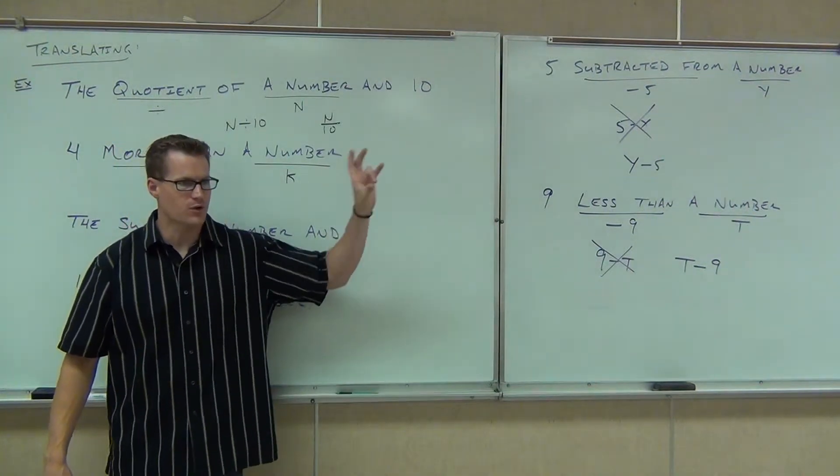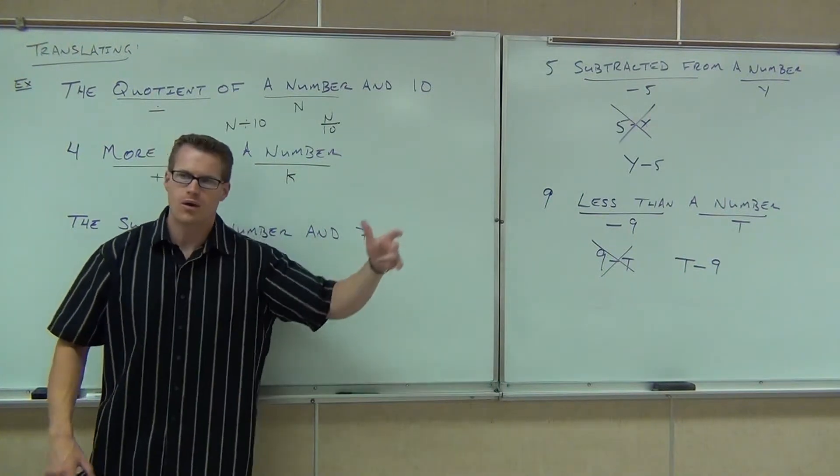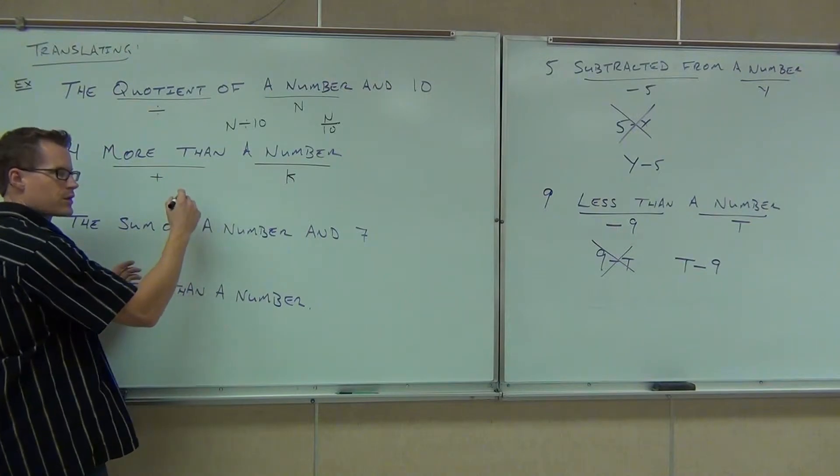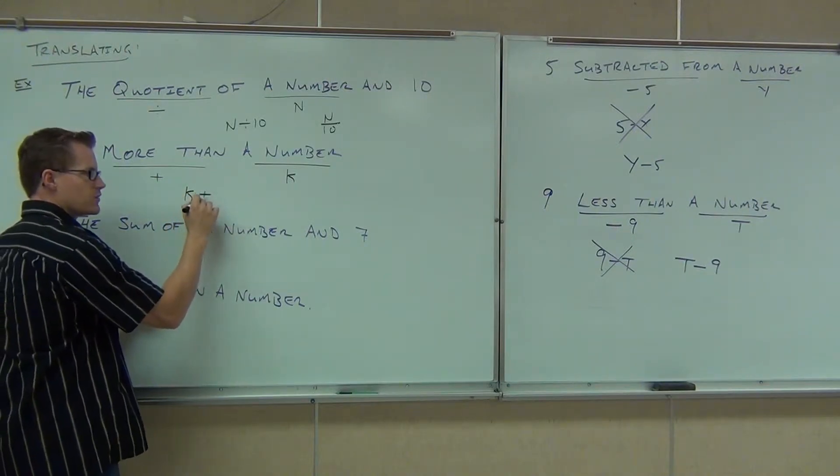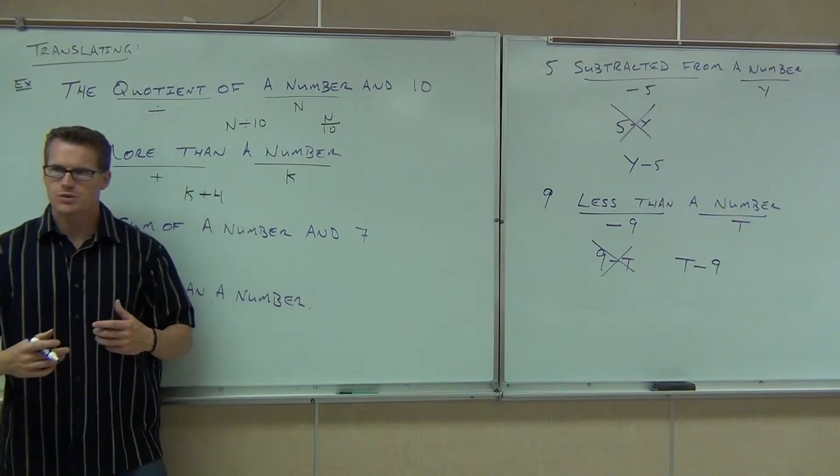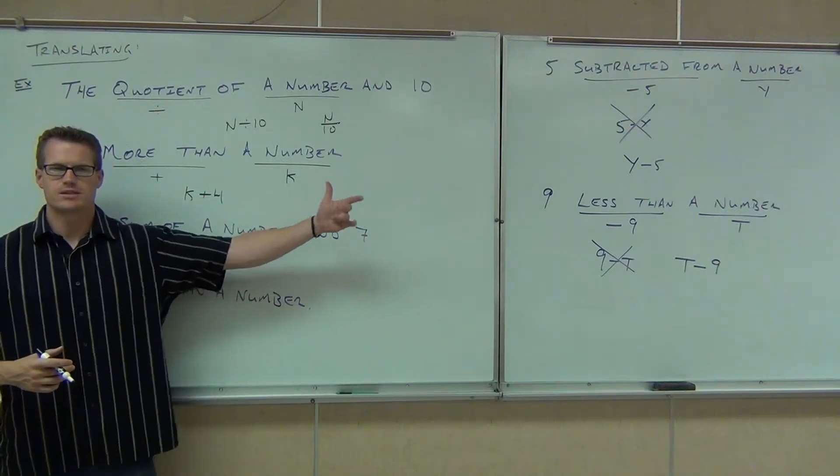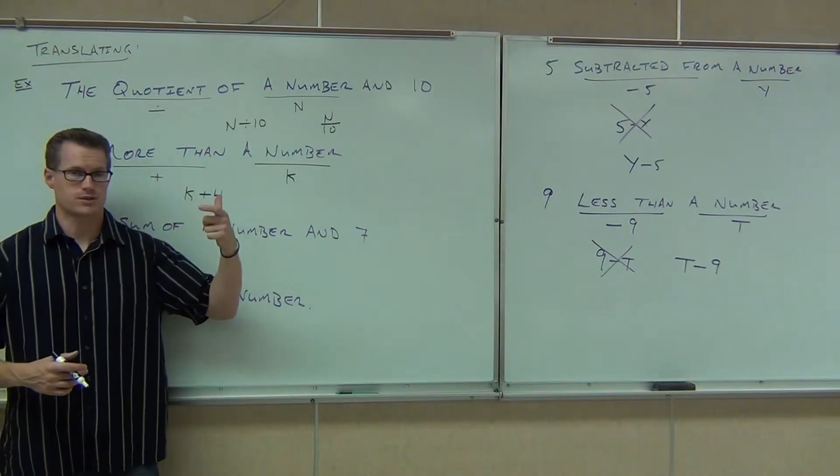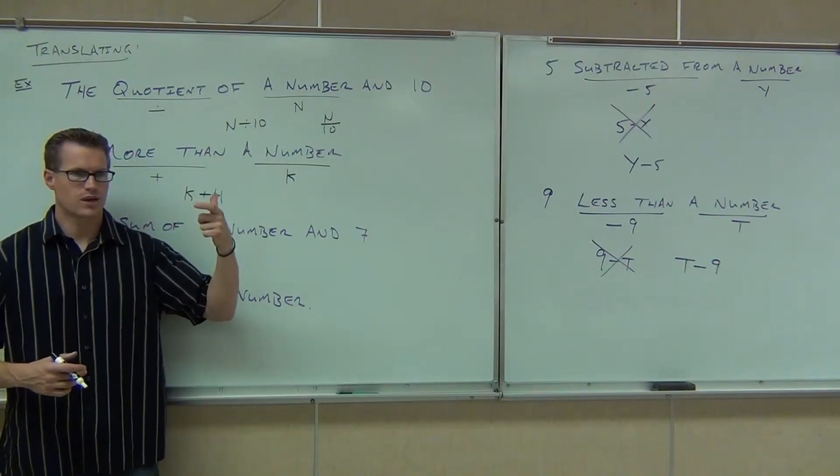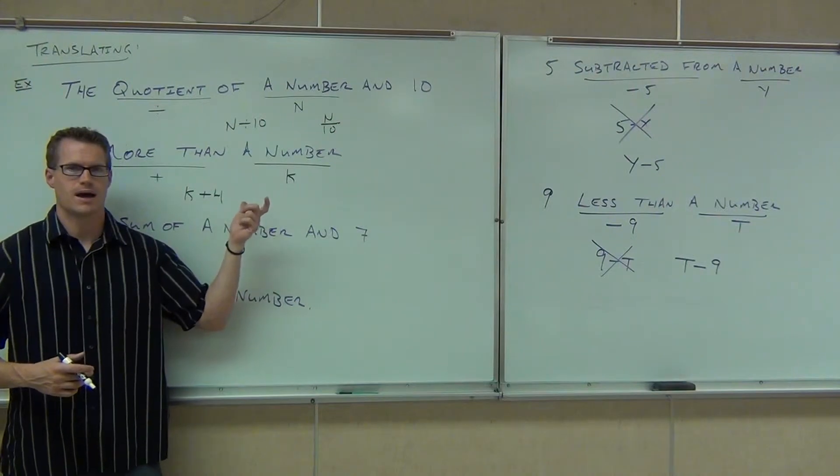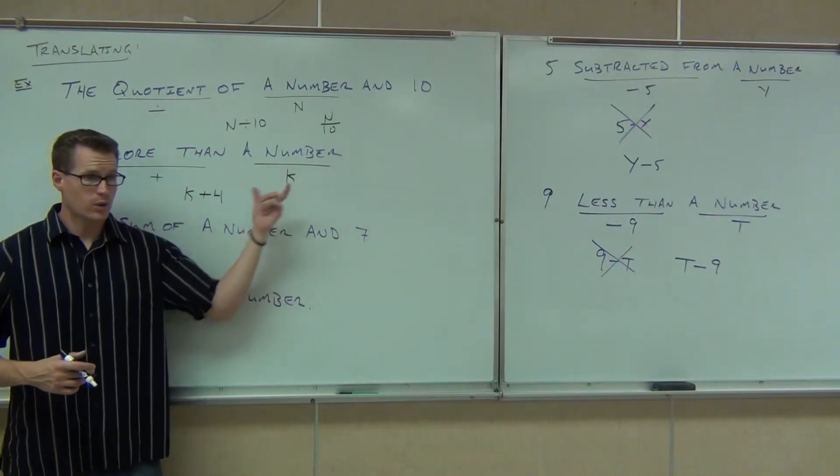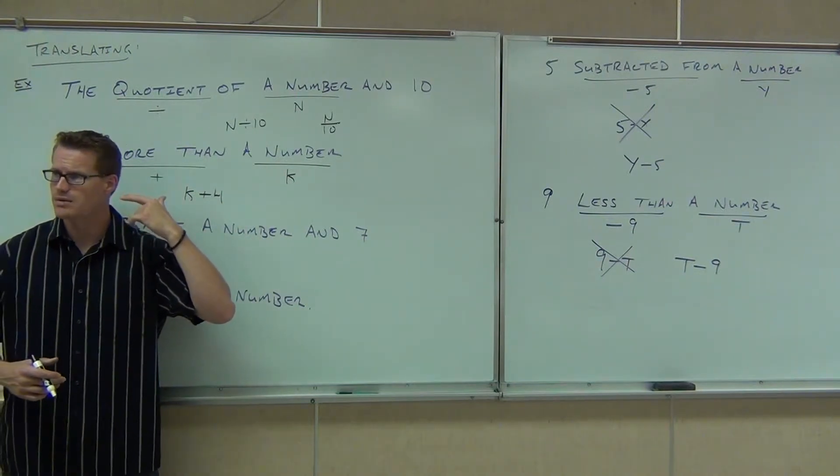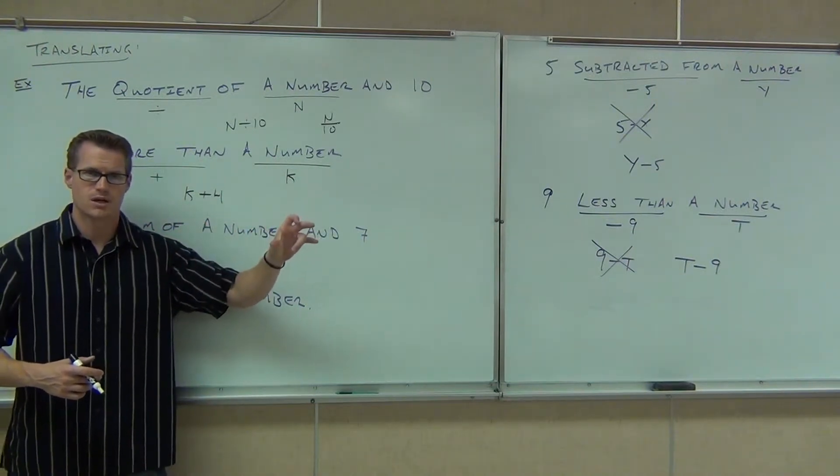Remember, less than says it's referring to the second thing, it's coming after that. Now, this is appropriately written. 4 more than k would be k, and then you're doing 4 more than that. The difference between this one and the less than one is this: Addition is commutative, which means you can flip it around and it doesn't make any difference. Do you understand?